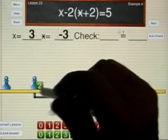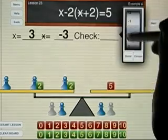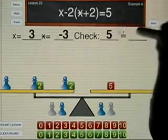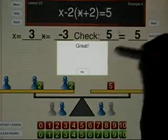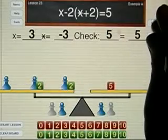And on the right side I also have 5. So in lesson 23, remember that if you need to subtract something that's not already on the balance, first add a convenient zero.